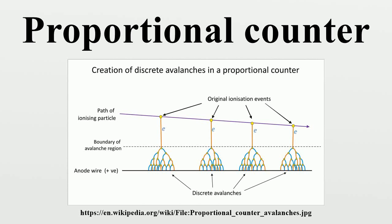The proportional counter is a type of gaseous ionization detector device used to measure particles of ionizing radiation. The key feature is its ability to measure the energy of incident radiation by producing a detector output that is proportional to the radiation energy, hence the detector's name. It is widely used where energy levels of incident radiation must be known, such as in the discrimination between alpha and beta particles, or accurate measurement of X-ray radiation dose. A proportional counter uses a combination of the mechanisms of a Geiger-Müller tube and an ionization chamber, and operates in an intermediate voltage region between these.